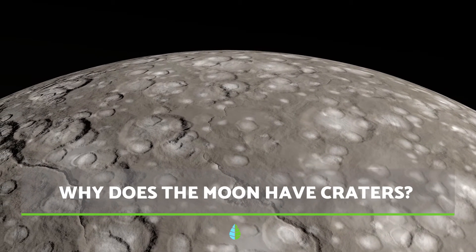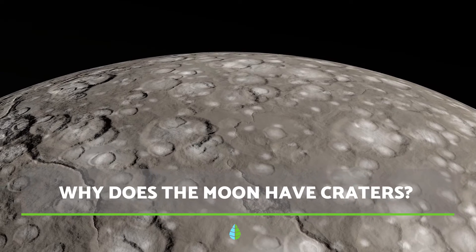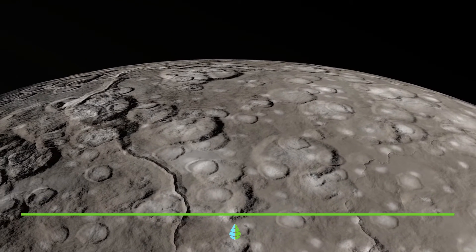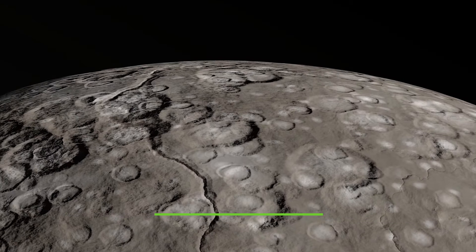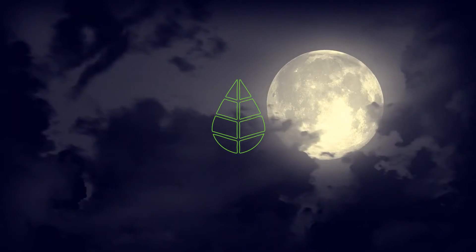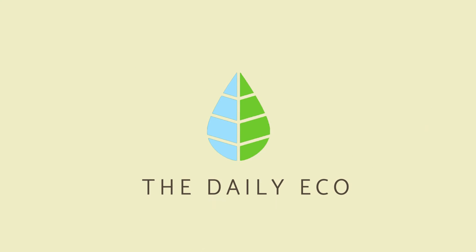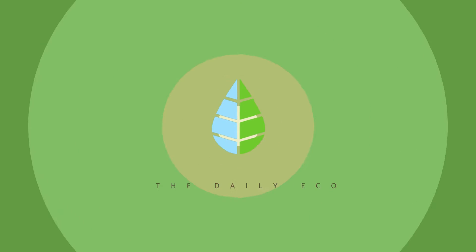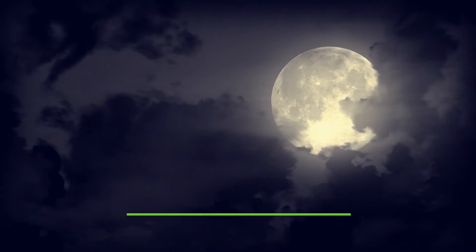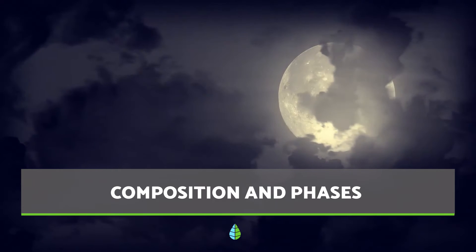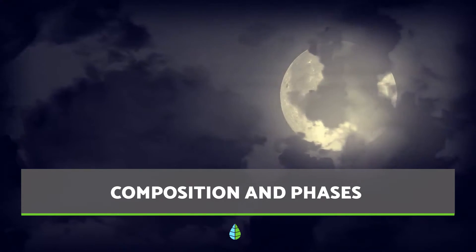Ever wondered why the moon has holes? These holes are actually called lunar craters. Let's dive right in to find out how they're formed and why the moon has them.